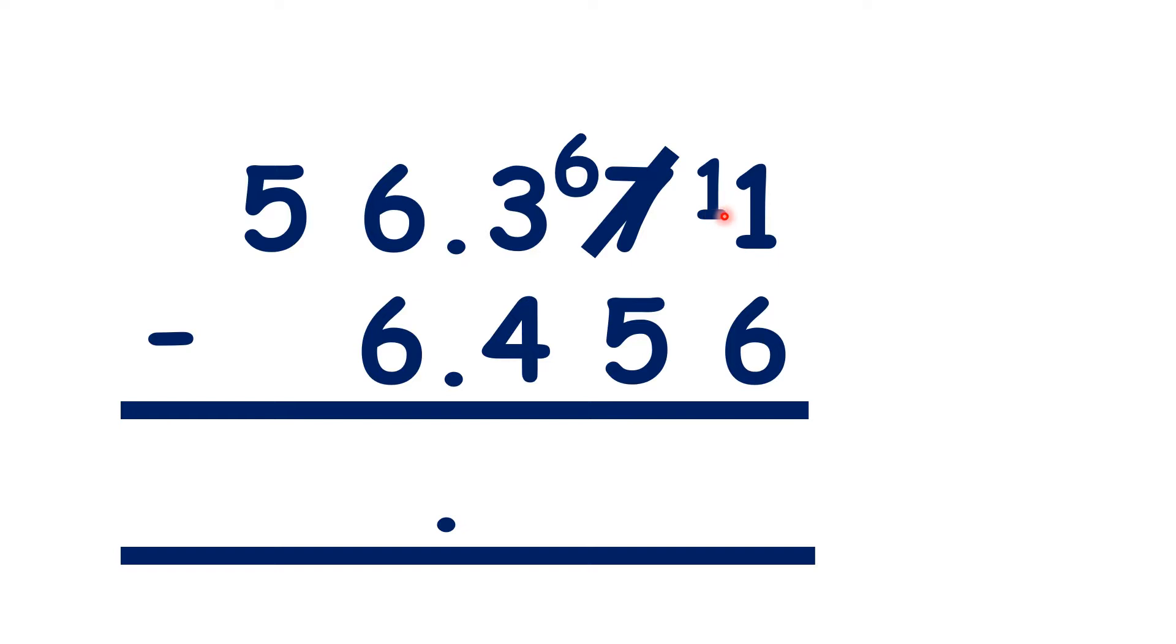Now we have eleven thousandths minus six thousandths, so that's five thousandths. Now we have six hundredths minus five hundredths, so one hundredth.